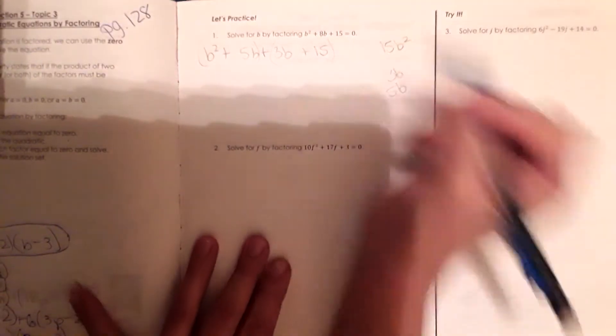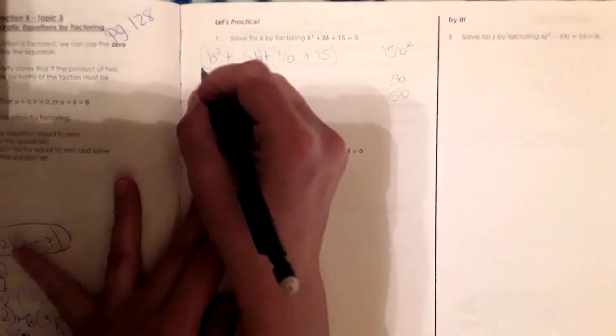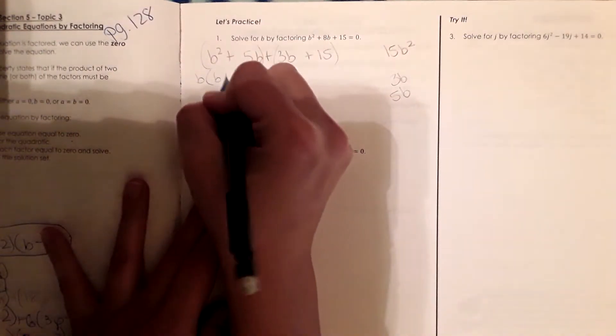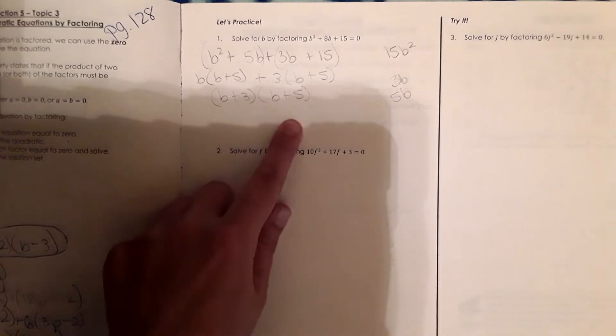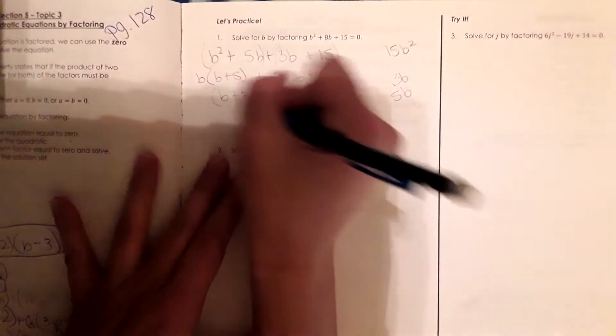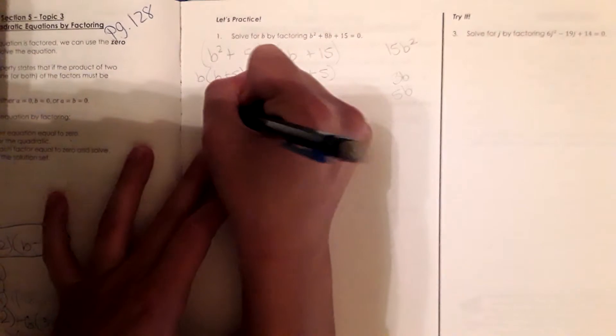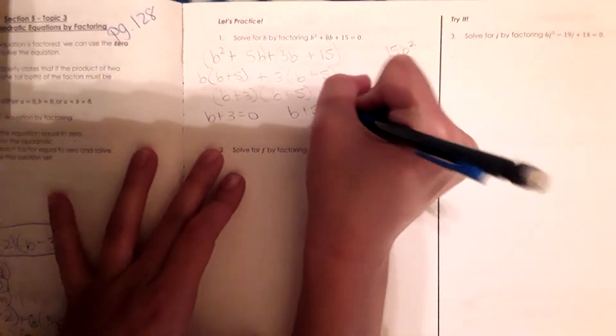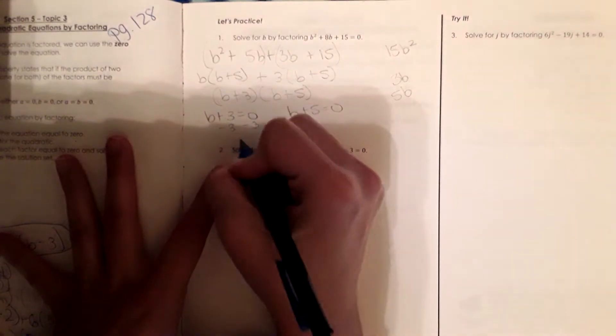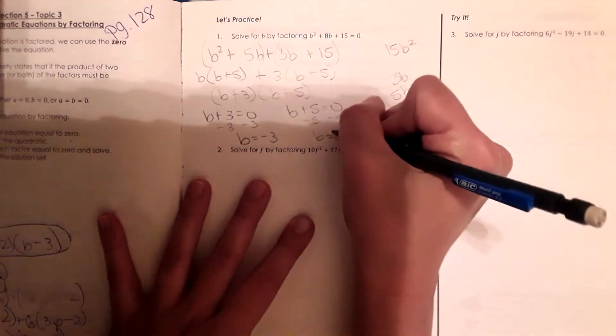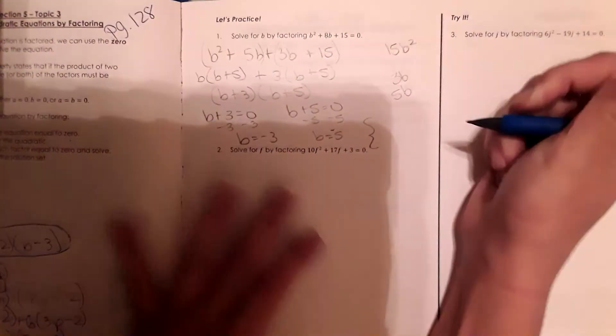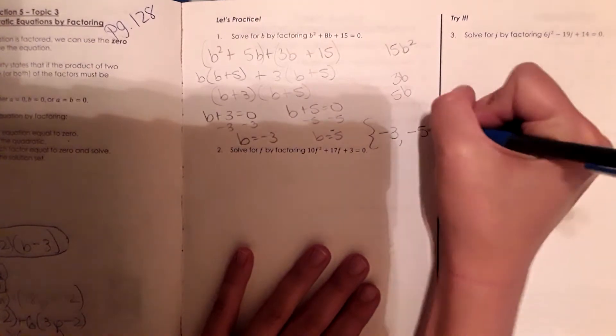Then I'm going to group it there and pull out the greatest common factor. In this case it's b, so b plus 5 and 3b plus 5. So now we have the factors b plus 3 and b plus 5. We factored it like we did in the last lesson. The next step for the zero property is to set each of these equal to zero. So we set this equal to zero and this one equal to zero and solve for b. So b equals negative 3 and b equals negative 5. So we could use these brackets. We get negative 3, negative 5 as our solutions.